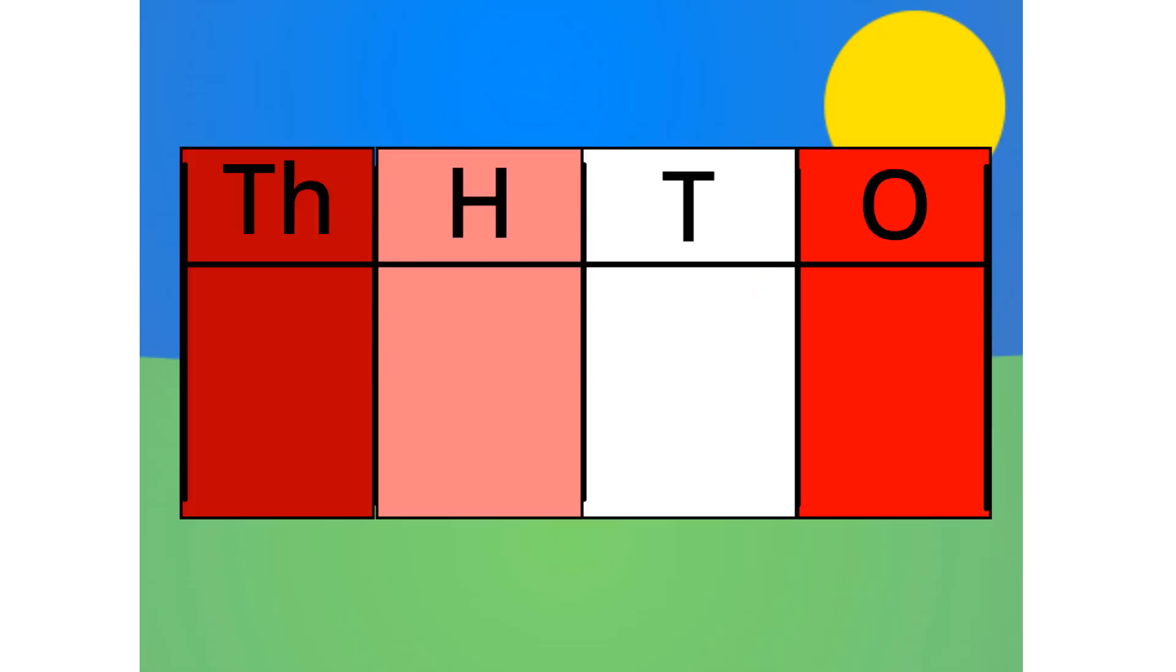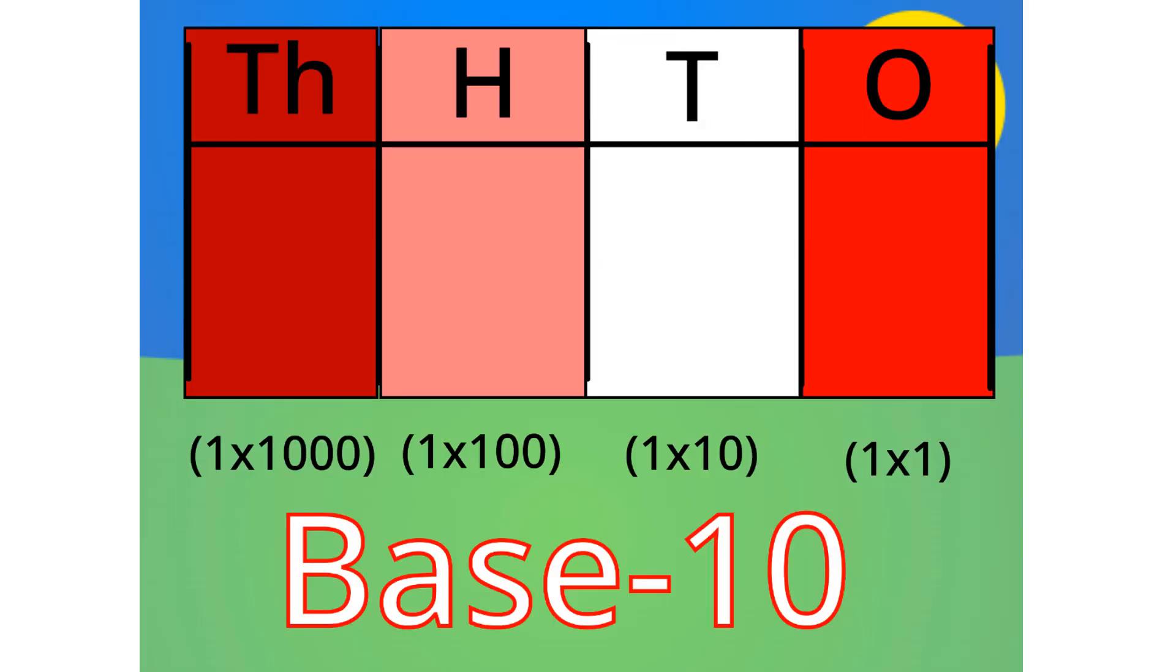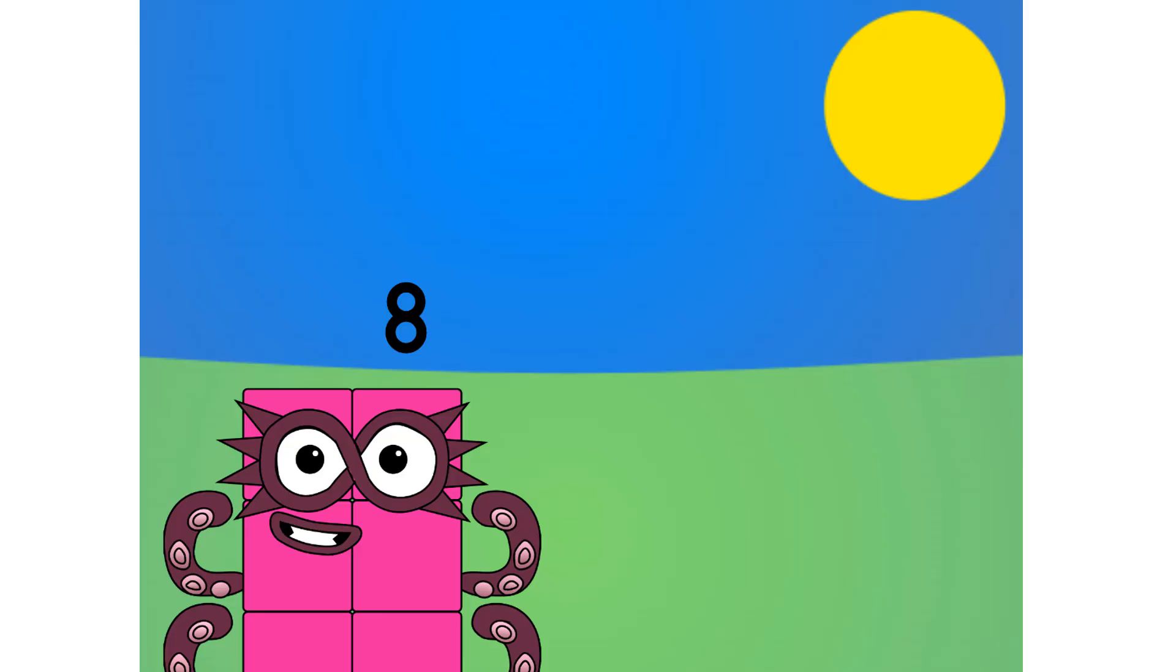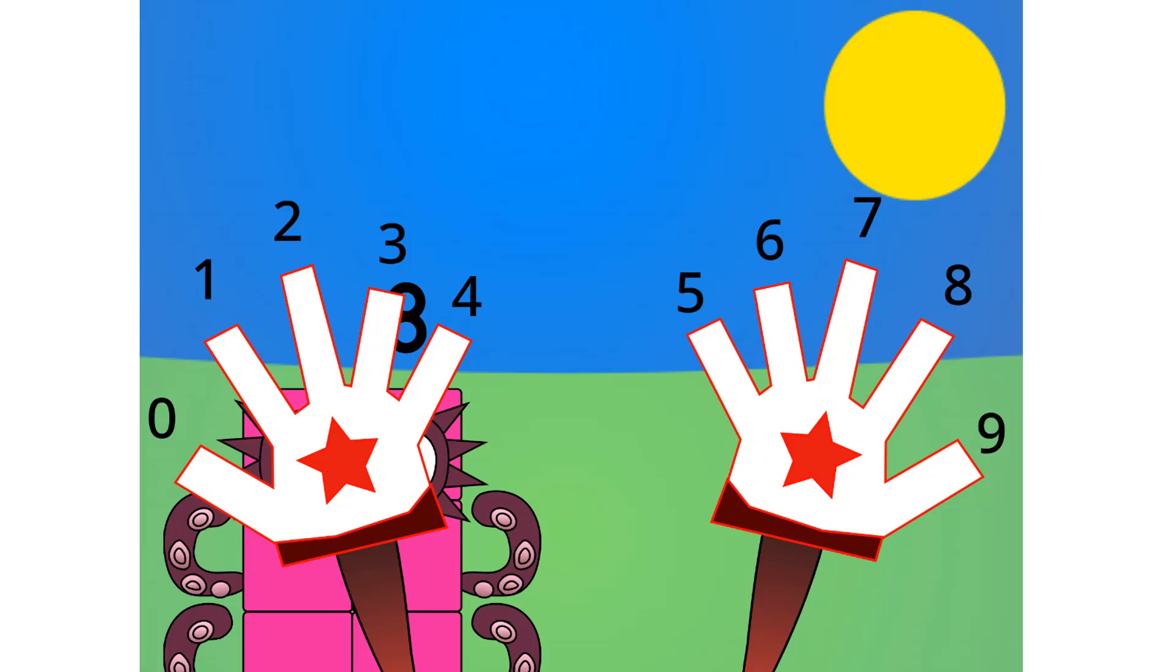Let me carry on with the first method. Do you notice anything with this table? Correct. The number multiplies by 10 each time it goes left one column. Because it multiplies by 10 each time, we call this system base 10.